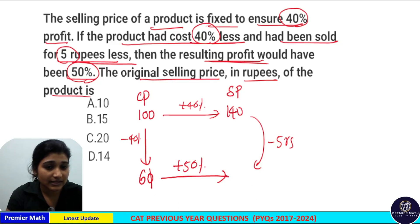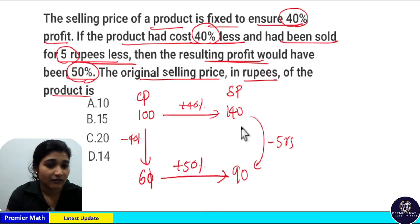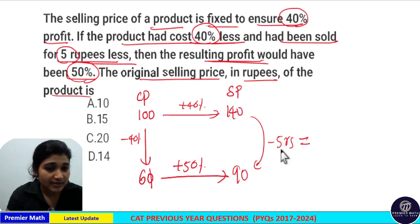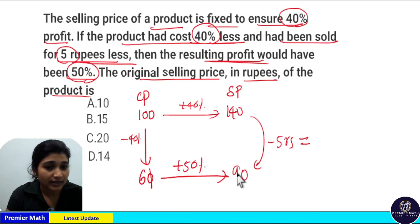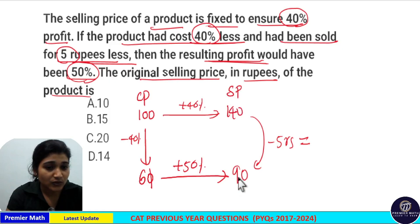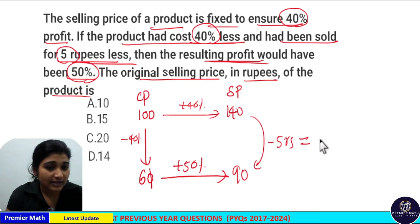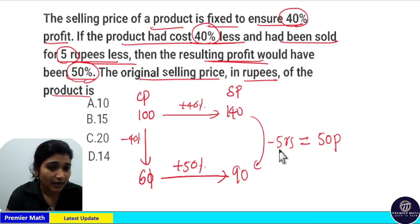So 60 plus 30 equals 90 rupees is the new selling price. This means the 5 rupees represents the difference between the old selling price of 140 and the new selling price of 90. So 140 minus 90 is 50 parts, and this 50 parts represents the 5 rupees difference.